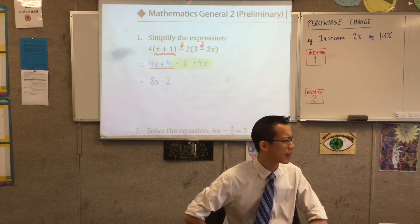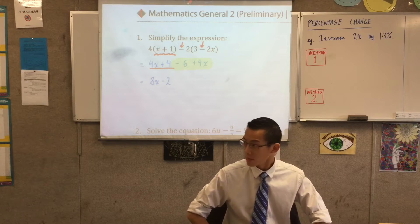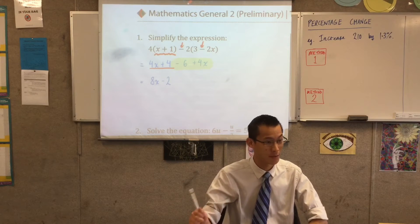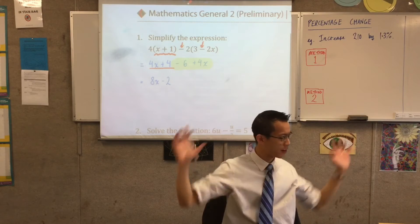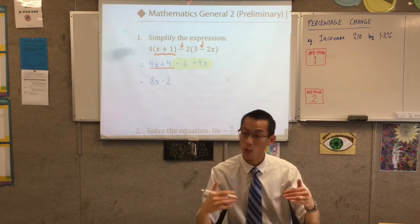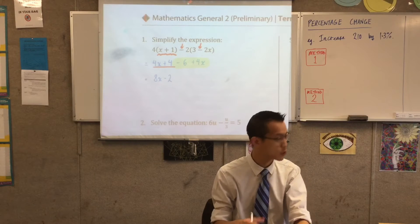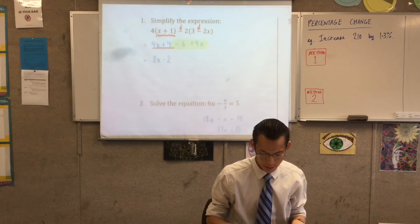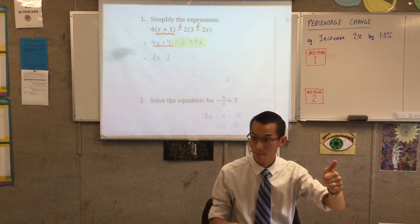What did I do from the second line to the third line? What happened next? Yeah, I collected like terms, right? We have this catch-all word of simplifying, which is what's happened all the way down, but you guys know, we have specific language for this, and the more specific you can be, the better. So, 8x minus 2, thumbs up.